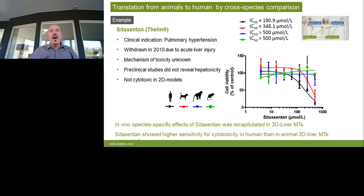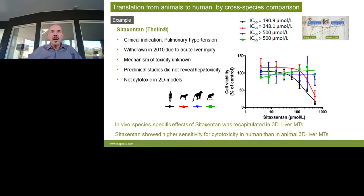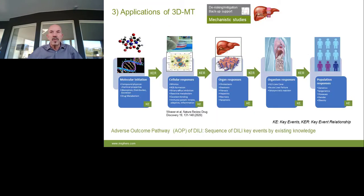This is an example of a compound withdrawn from the market: sitaxentan. It showed effects in human after successful registration. This is a retrospective evaluation using the 3D models, comparing rat, dog, and monkey head-to-head. It turned out that the human model indicated higher toxicity for sitaxentan, while other species were less sensitive. This confirms the decision made to withdraw it from the market.